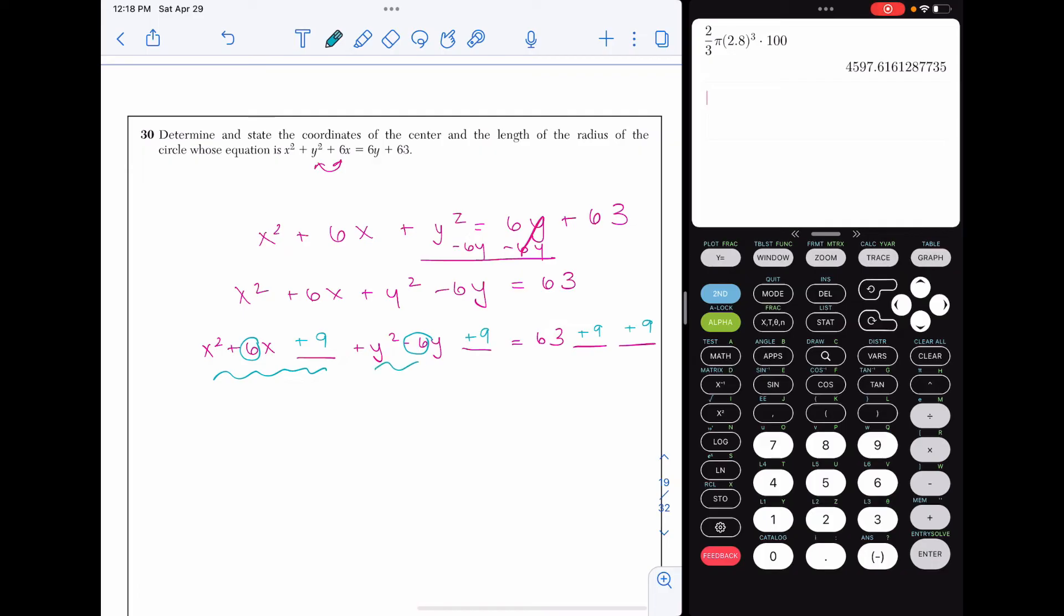Now you're going to look at these three pieces independently and factor. Over on the right-hand side, just add 63 plus 9 plus 9. Anytime you factor or you're multiplying something by itself, that's the same thing as squaring it. So I'm going to rewrite it as these pieces squared. And that's going to make my equation of the circle in center radius form.